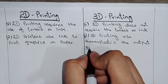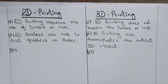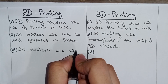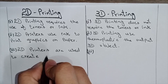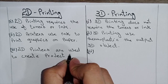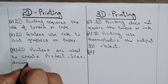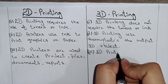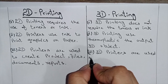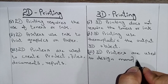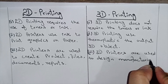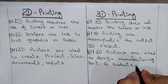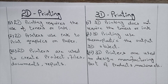The output of 3D printing is 3D objects. 2D printers are used to create project files, documents, and reports, while 3D printers are used to design manufacturing parts of products, machines, etc.